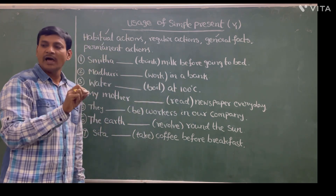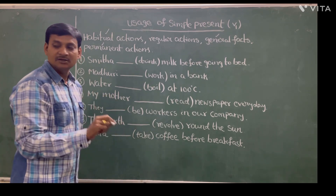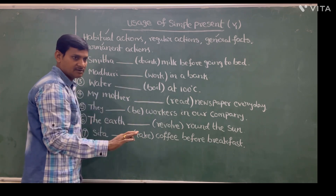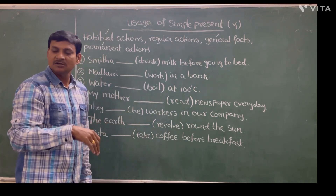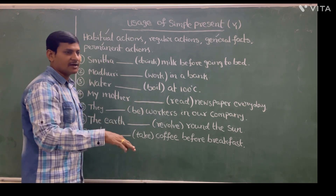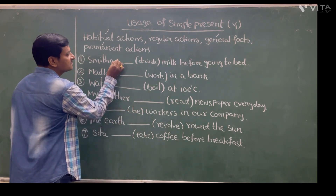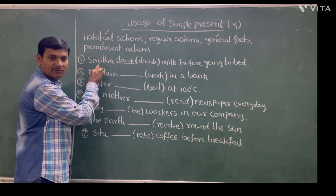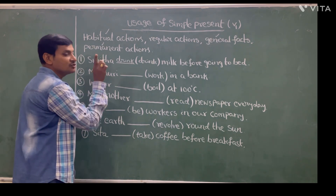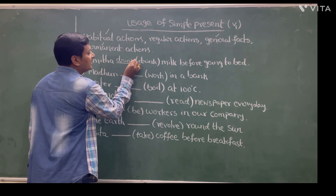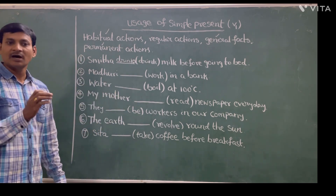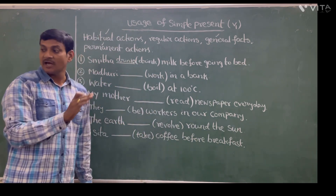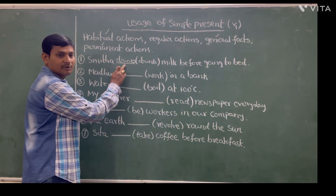A habitual action must be expressed in simple present. The simple present form of 'drink' is 'drink'. But the subject pronoun of Smita is 'she' — third person singular — so we add 's' to the verb. So the answer is: Smita drinks milk before going to bed. This is a habitual action, so we write it in simple present.